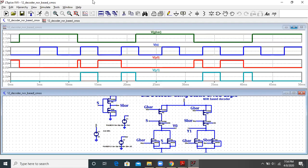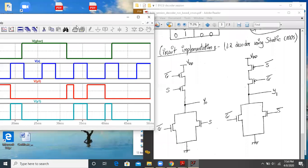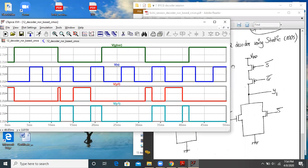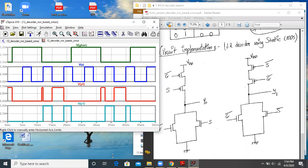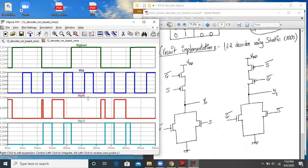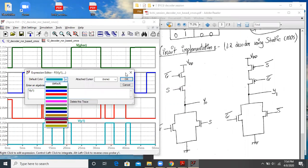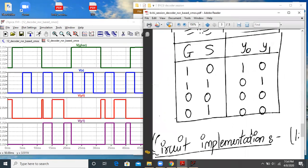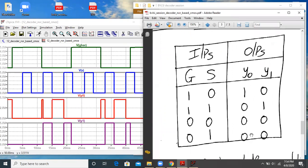Now let me show you this by minimizing this window, and on the other side, I will open up the truth table so that we can verify this. Let me change the color of Y1 so that it is more clear to you. Here there is Y1. And let me now open up the truth table. This is 1:2 decoder truth table.